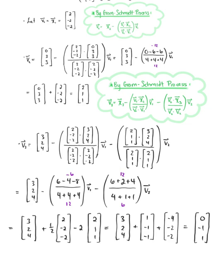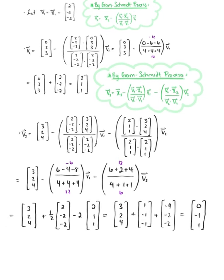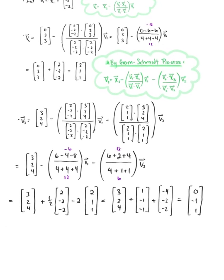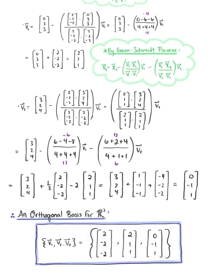We are officially ready to state that, therefore, an orthogonal basis for R³ by the Gram-Schmidt process is the set of vectors (2, -2, -2), (2, 1, 1), and (0, -1, 1).